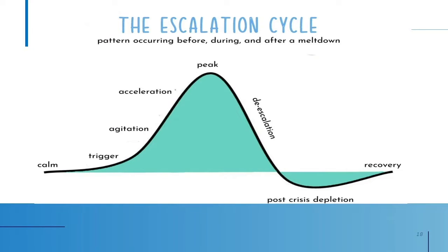This graphic shows the escalation cycle — the typical pattern that occurs before, during, and after a tense situation. First, things might appear calm, but a person is triggered by some comment. Then they get agitated and the tension accelerates. If you can diffuse the stress as it builds up, it won't have to peak — and that's our objective. After the peak there's a de-escalation, and don't forget about the final post-crisis depletion, where you're exhausted from a rush of adrenaline and need to recover from the situation.